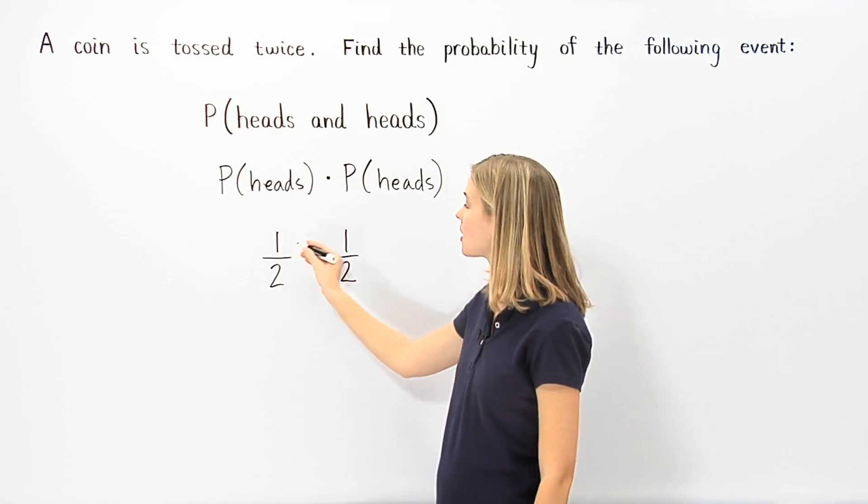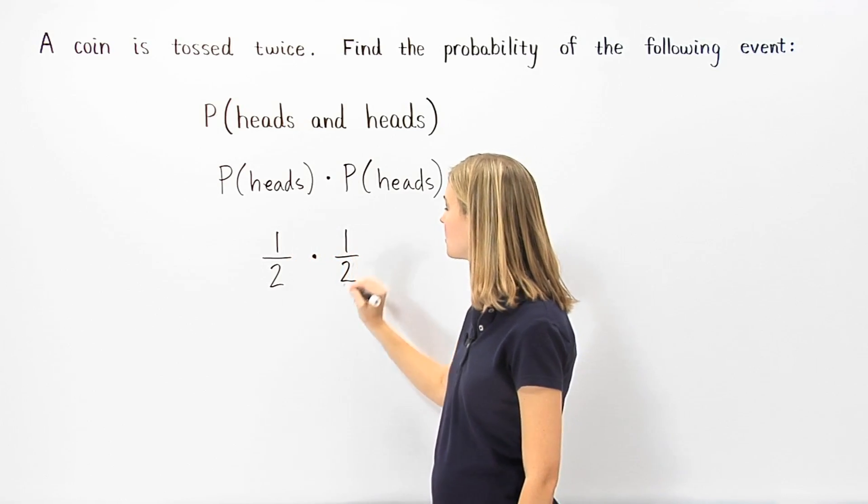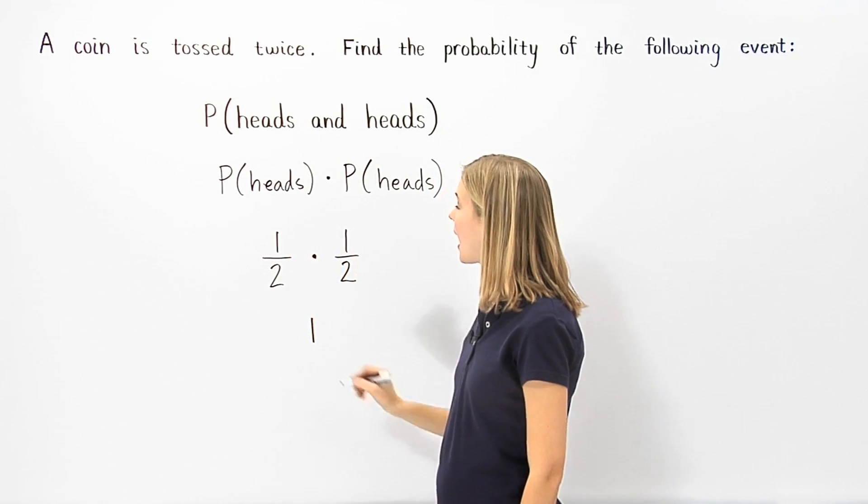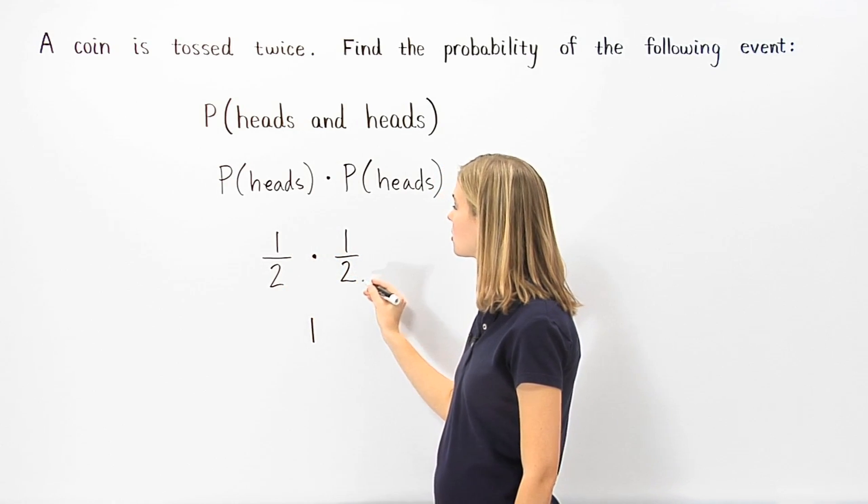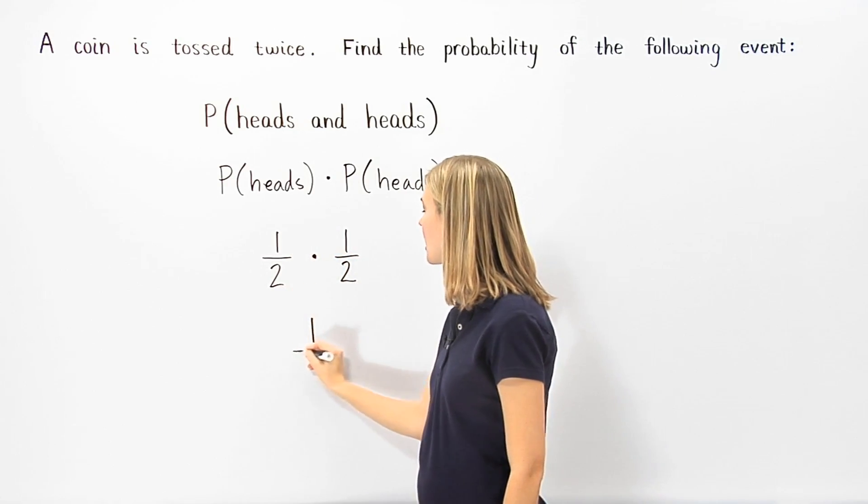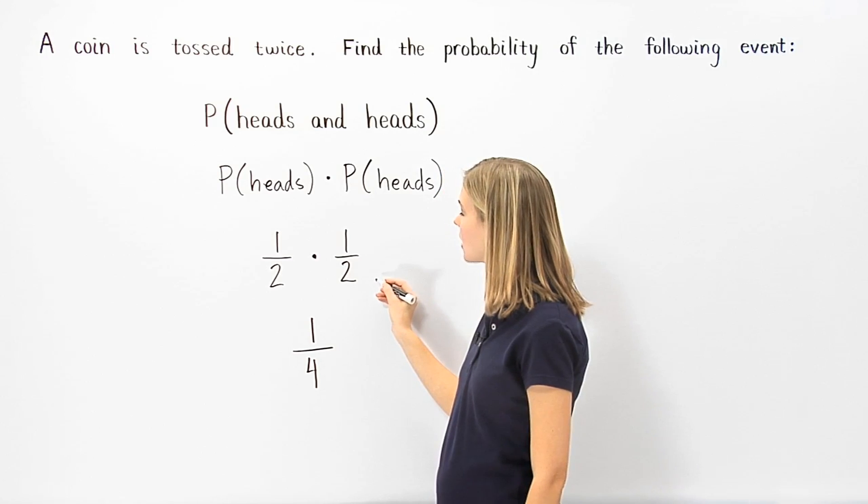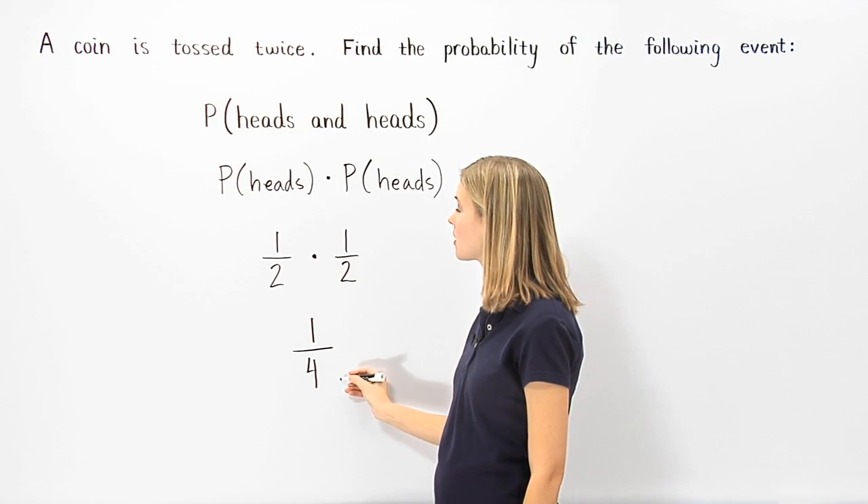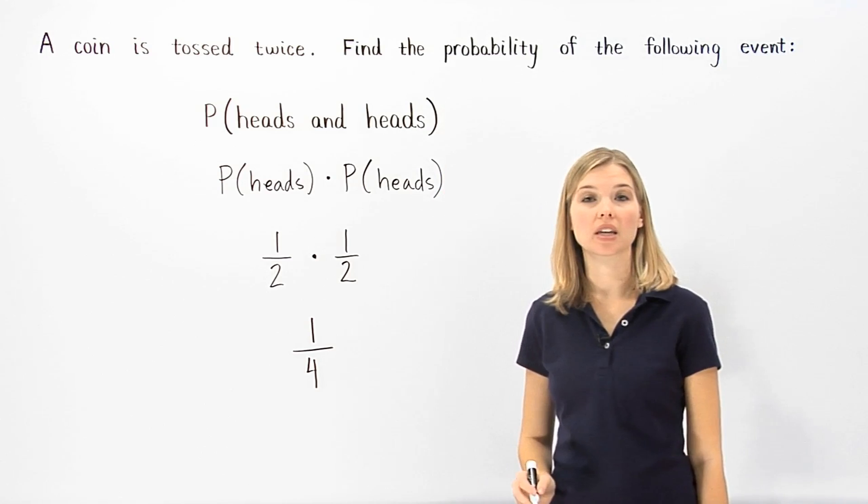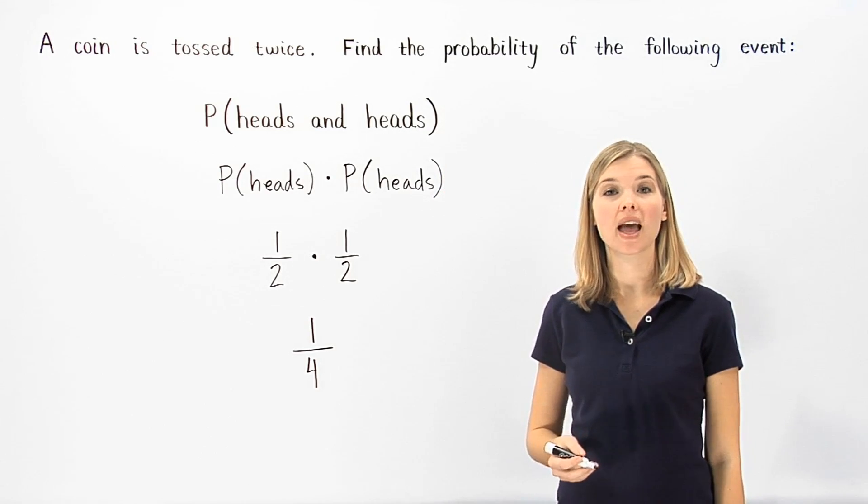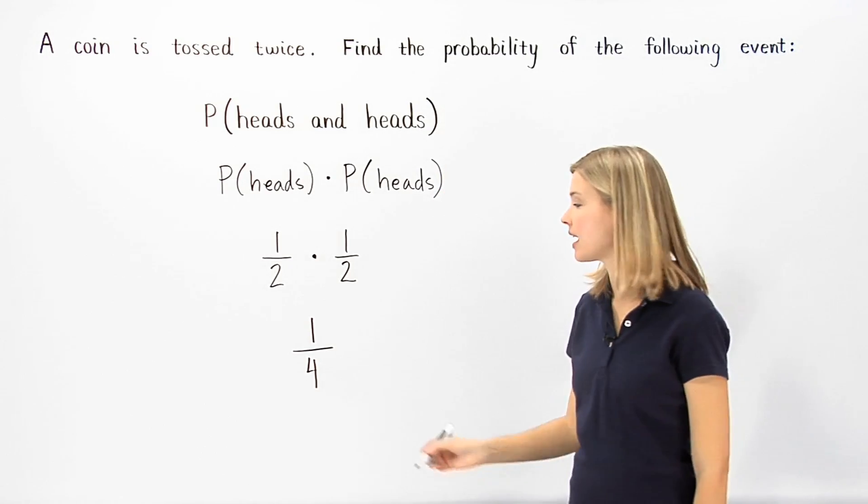Now, multiplying across: one times one is one, and two times two is four. So one half times one half is one fourth, which means that the probability of tossing a coin twice and getting heads and heads is one fourth.